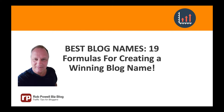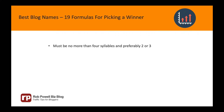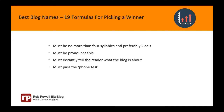But before I start, here are five key characteristics of good blog names. One: must be no more than four syllables, and preferably two or three. Two: must be pronounceable. Three: must instantly tell the reader what the blog is about. Four: must pass the phone test — if you told someone the name of the blog over the phone, they could write it down without you having to spell it for them.